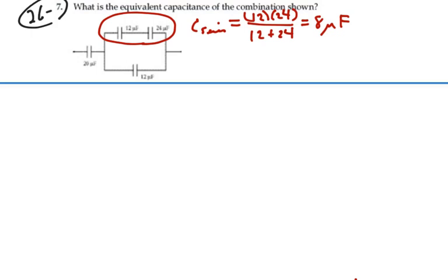We can rewrite this circuit looking something like this. We have this 20 here. We have 8 up here. And we have 12 down here, all microfarads.